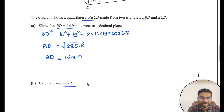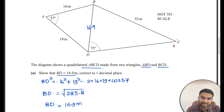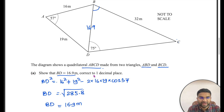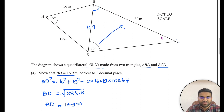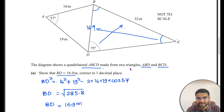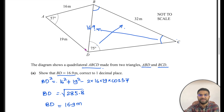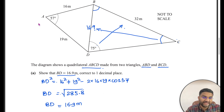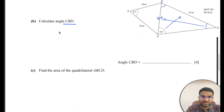Next, calculate angle CBD. In triangle BCD, the side opposite the 75° angle is 32, and the side opposite angle C is BD = 16.9. We can use the sine rule: sine C over 16.9 = sine 75° over 32.